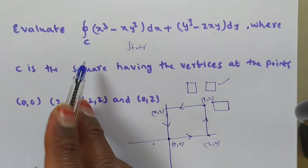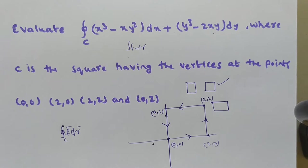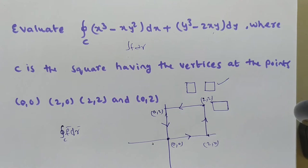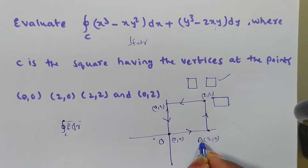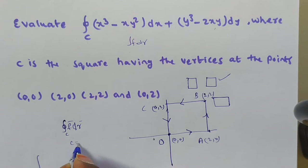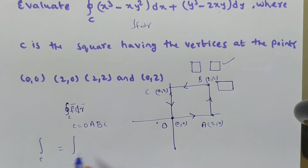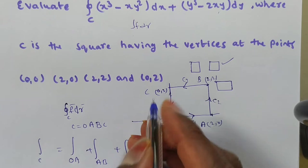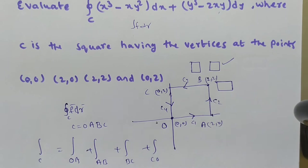This problem can also be solved by using Green's theorem, which allows us to change from a line integral to a double integral — we will discuss that in the next videos. For now, we assign labels: O, A, B, C to the vertices. We divide curve C into four parts: C1 is O→A, C2 is A→B, C3 is B→C, and C4 is C→O.